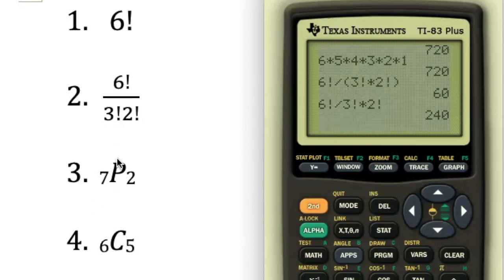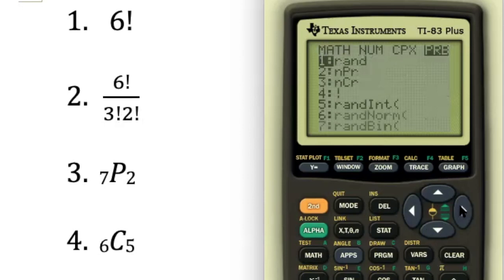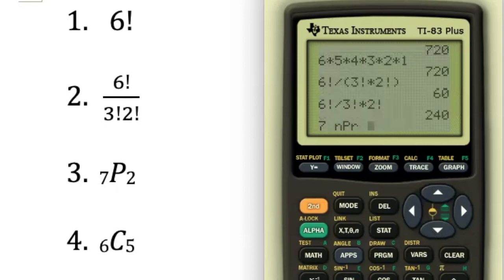To calculate 7P2, or the number of permutations of 7 objects using 2 at a time, you need to put the first number in first, then go to the math key and the probability menu, choose the second choice, nPr, and then put your r value in after that notation. So this is how you would enter 7P2. Hit enter, you should get 42.